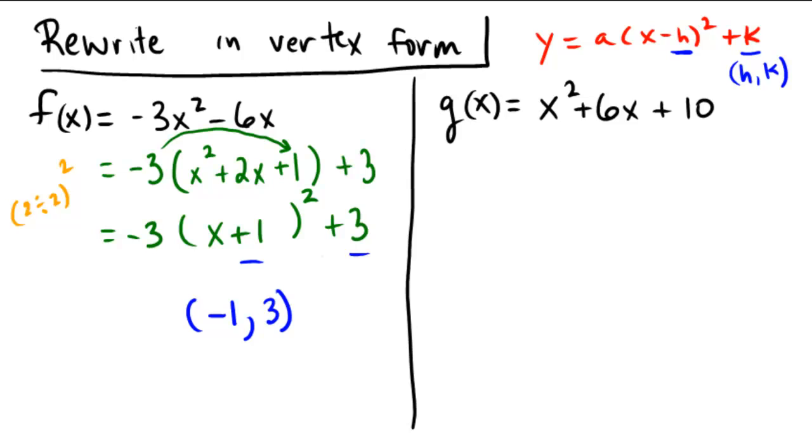Let's do one more example before you try one on your own. Over here, we have x squared plus 6x plus 10. The number that we wish to fill in the blank by completing the square would be 6 divided by 2 quantity squared. So of course, 6 divided by 2 is 3. 3 squared is 9.